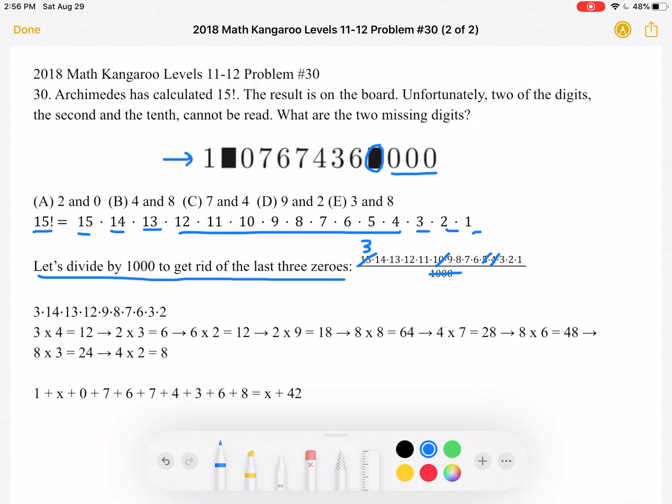Now we can see that we have 3 times 14 times 13 times 12 times 9 times 8 times 7 times 6 times 3 times 2 left. If we look over here, that's what's left after we divide by 1000.